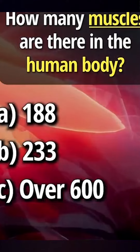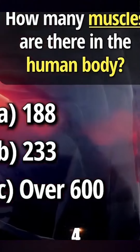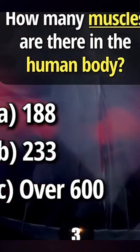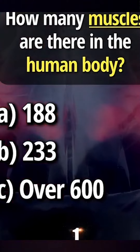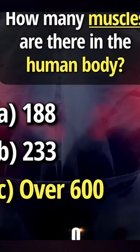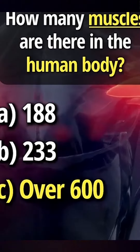How many muscles are there in the human body? Answer. C. Over 600.